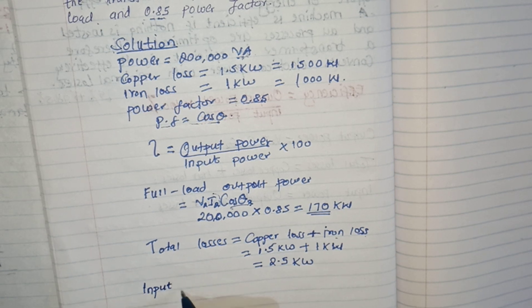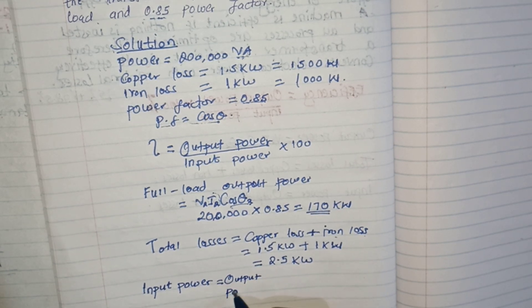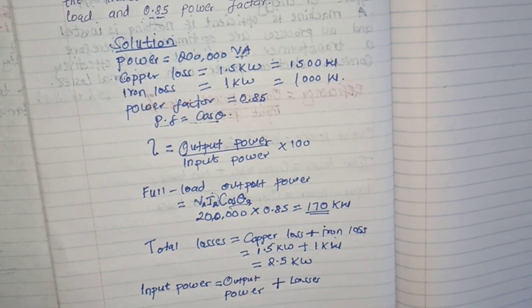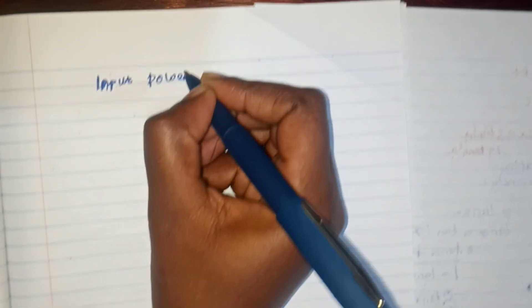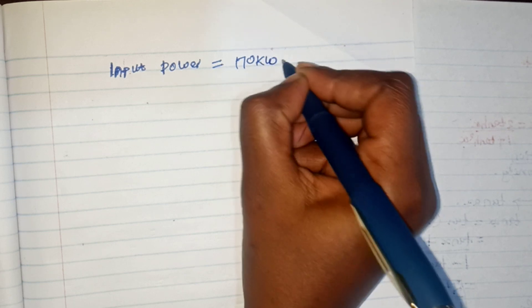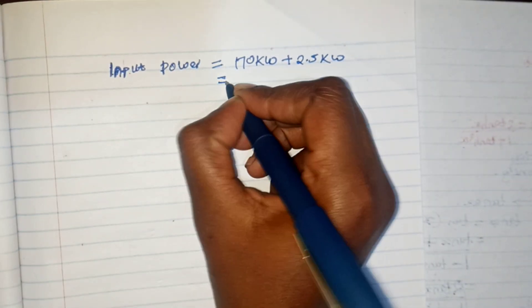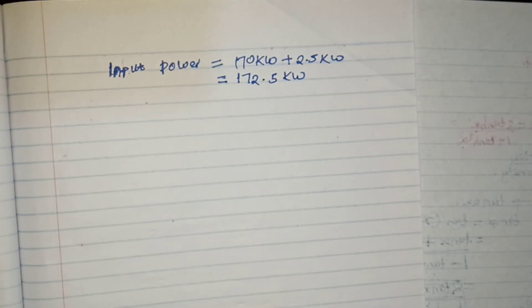We know that input power equals output power plus the losses. So input power = 170 kilowatts + 2.5 kilowatts = 172.5 kilowatts. Now that we have the output power and the input power, we can calculate the efficiency.